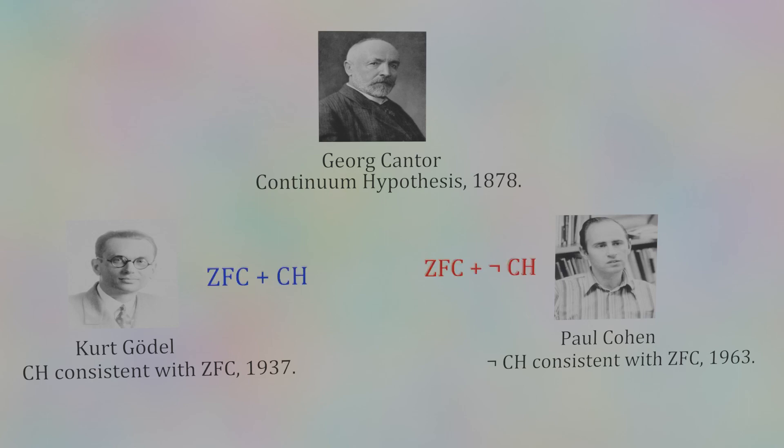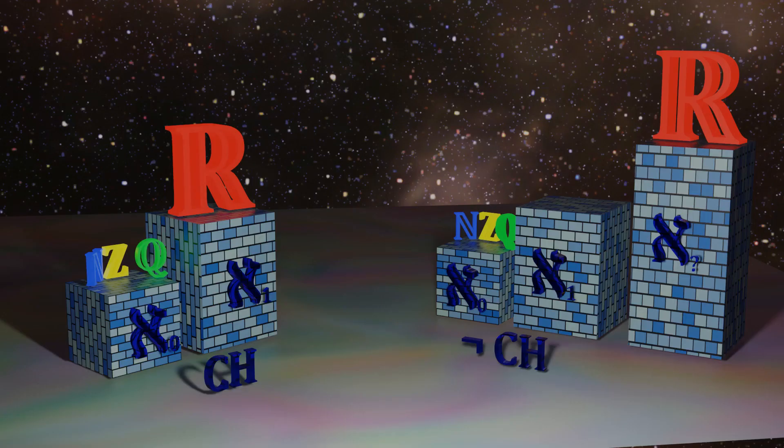So, the continuum hypothesis is independent of the standard set theory. We can add the hypothesis, or its negation, as an axiom, preserving the consistency of the theory.